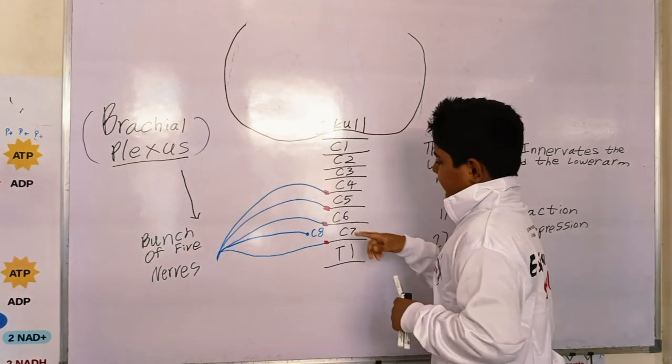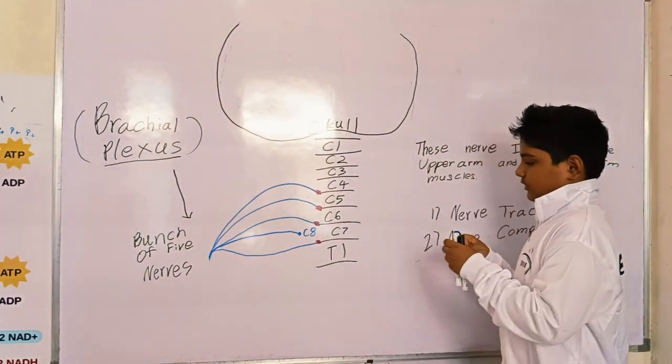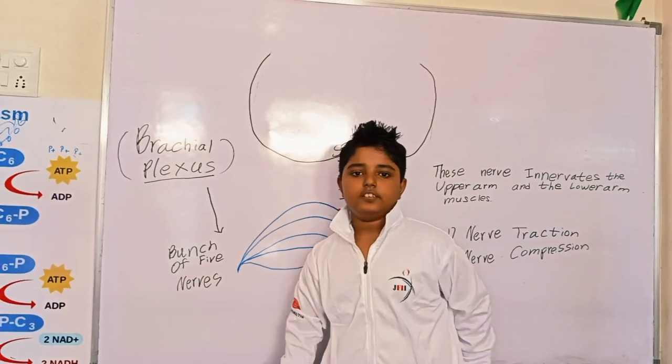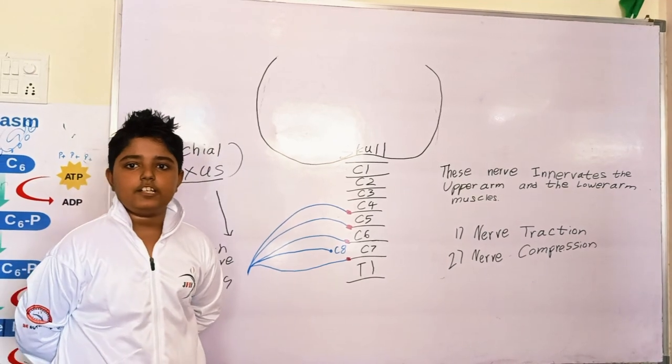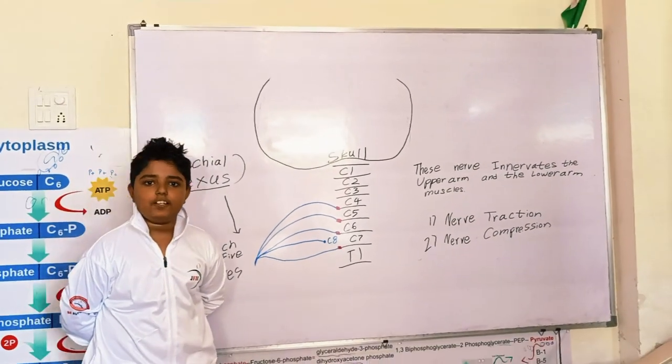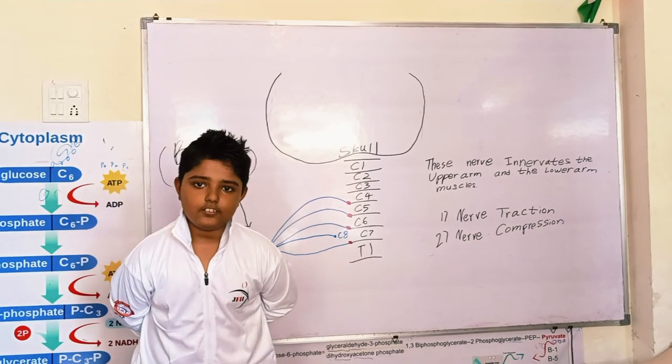In the upper arm and the lower arm, if nerve damage occurs, there is loss of action in the upper arm and lower arm.